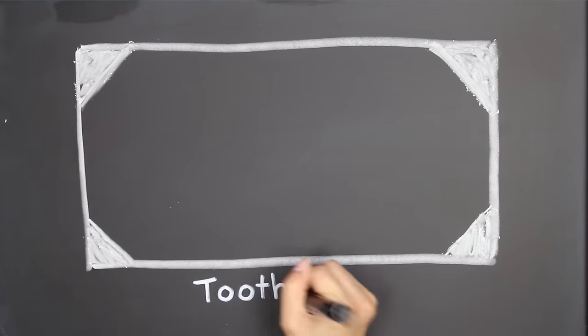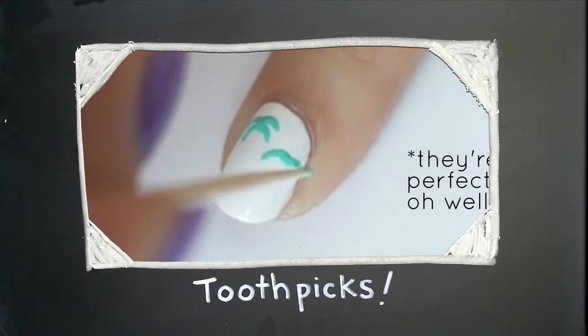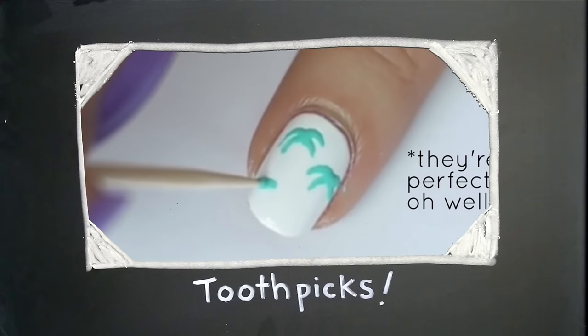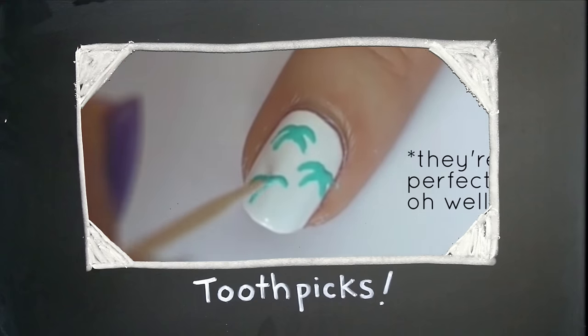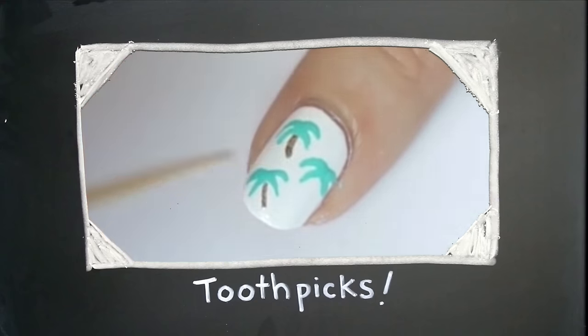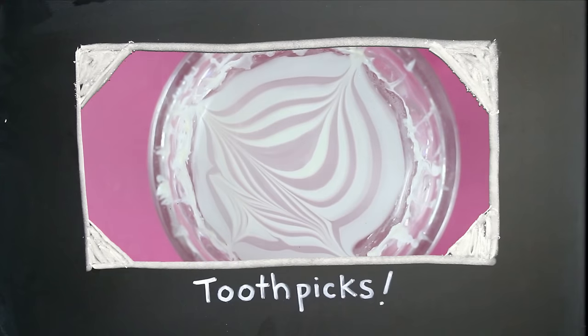Another nail art essential is a box of toothpicks. Toothpicks are cheap and they can be used in so many ways when it comes to nail art. You can use them like a brush and drag it to make designs, you can use them to make dots like I mentioned before, or you can use it with water marbling.